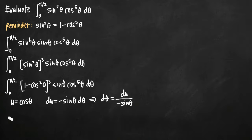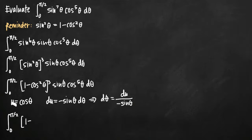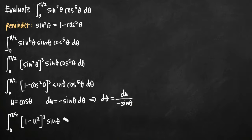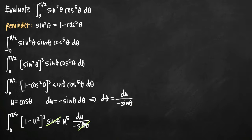Now that we've done that we can go ahead and make substitutions inside our integral. We set u equal to cosine of theta, so cosine squared of theta becomes u squared, giving us one minus u squared, cubed. We leave the sine of theta, change cosine to the fifth of theta to u to the fifth, and substitute d theta with du divided by negative sine of theta. This strategy works out well because we have a sine of theta in the numerator and a sine of theta in the denominator, so those two cancel. The negative sign does not cancel — it comes out in front as a constant coefficient.